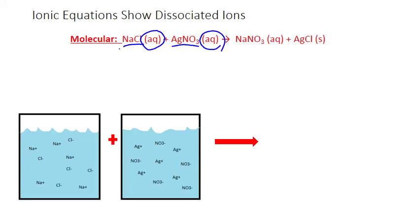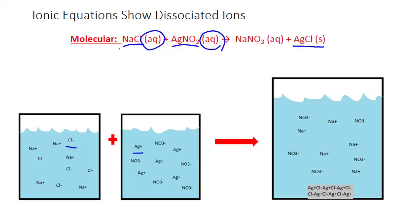When we mix these two beakers together, all of those different ions can approach each other. If any two ions approach each other and form a new compound that's not soluble in water — for example, solid silver chloride — those ions will actually remove themselves from solution. Anytime a silver ion and a chloride ion come together, they form a solid that precipitates out and goes to the bottom. As the two reactant solutions mix over time, more and more silver ions approach more and more chloride ions, and the solid continues to form.